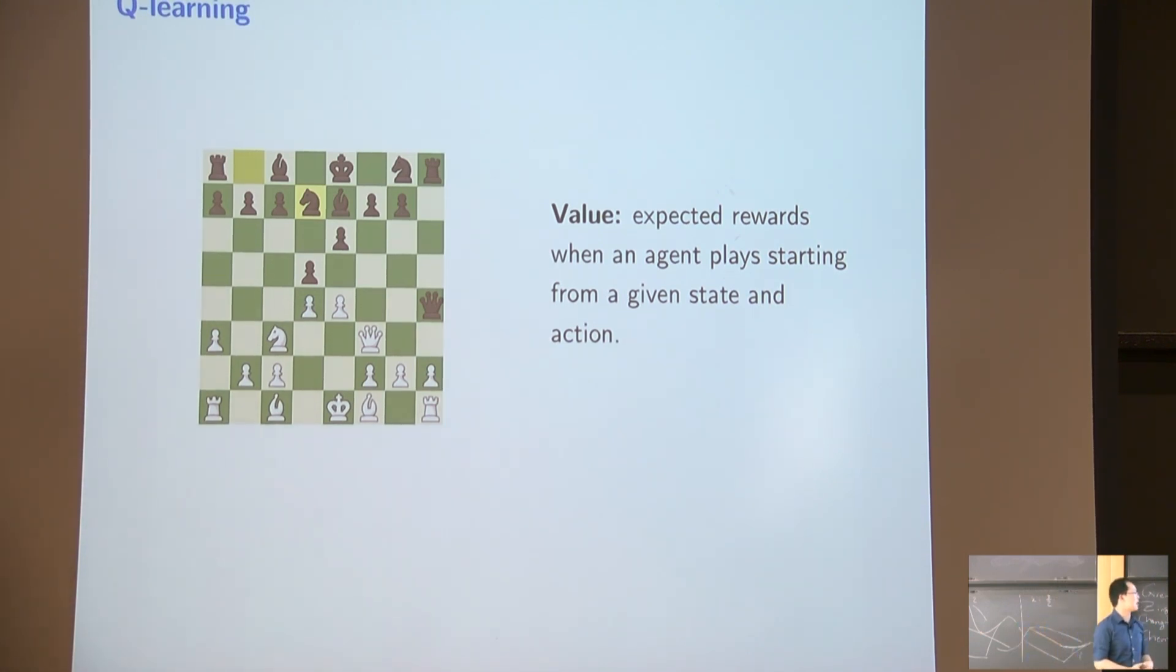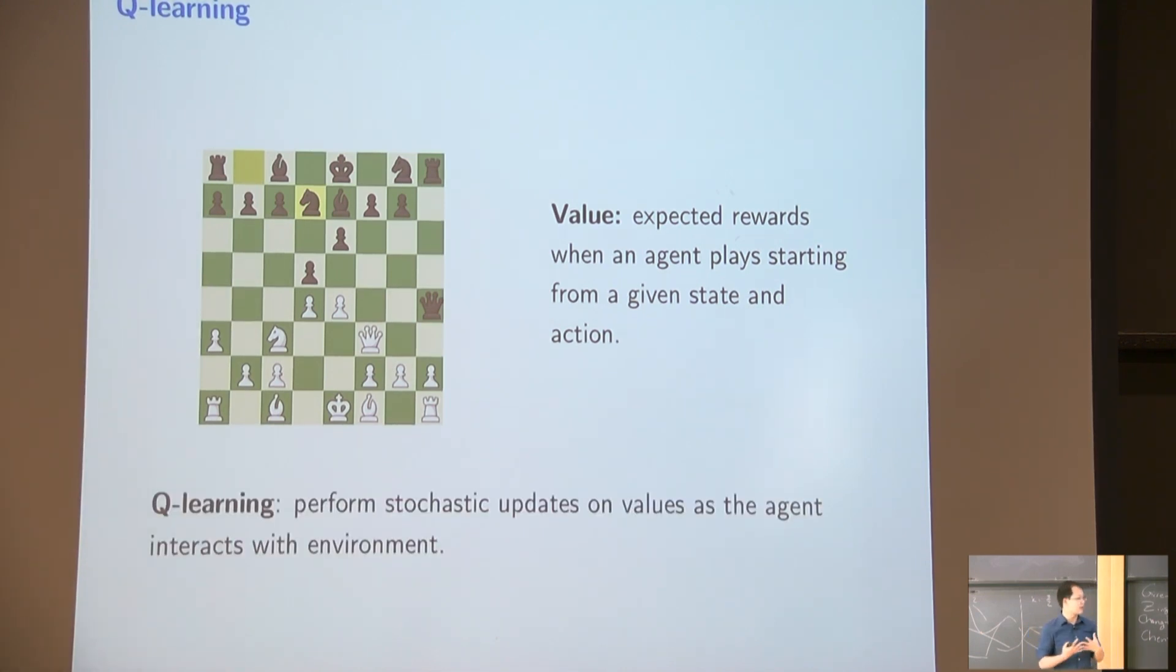And essentially, if you have the value, then you can just move each pieces, and you see what's the value you're going to end up being. So you will pick the action which should give you the highest value. So value essentially gives you a policy and how to play the games. And Q-learning is essentially just an algorithm so that you play the games. And then you just perform stochastic updates on those values when agents interact with the environment.